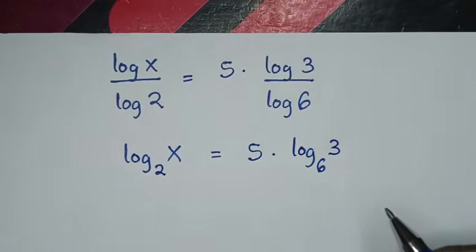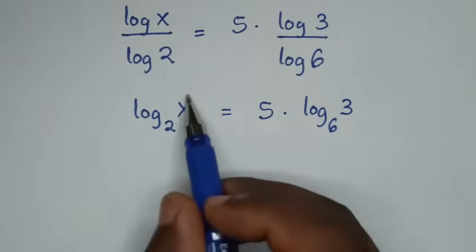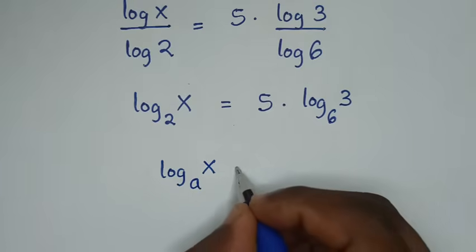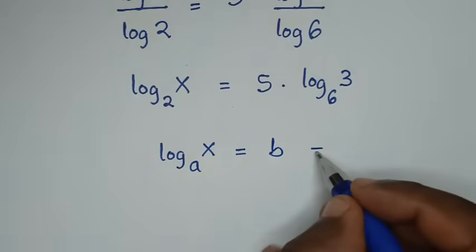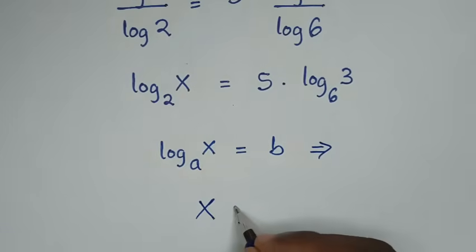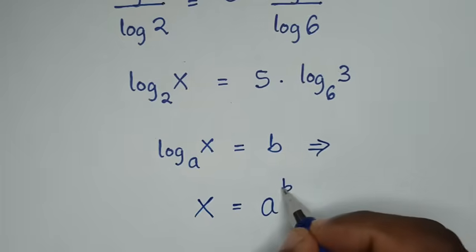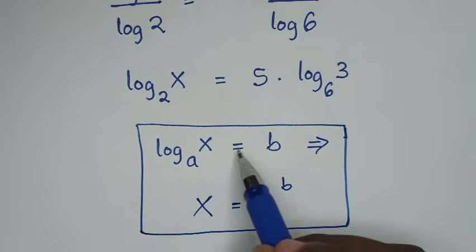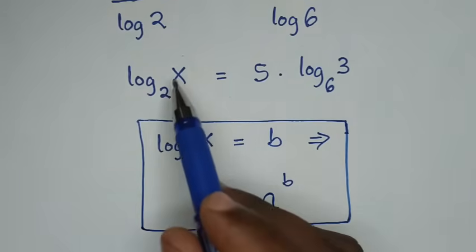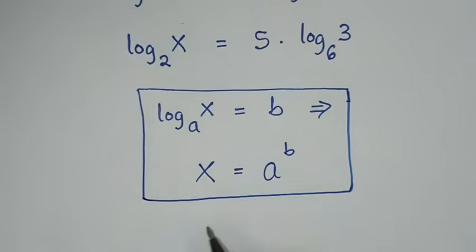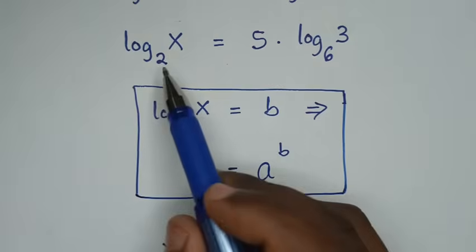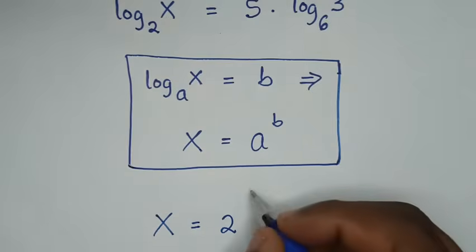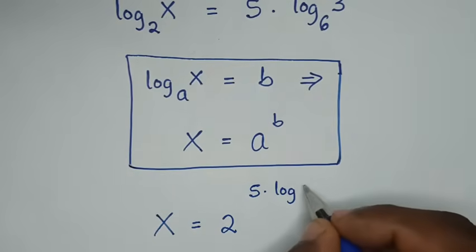From here, log of x over log of 2 is the same as log of x base of 2, and 5 times log of 3 over log of 6 is the same as 5 times log of 3 base of 6. To find x, we apply the rule: if log of x base of a equals b, then x equals a to the power of b.